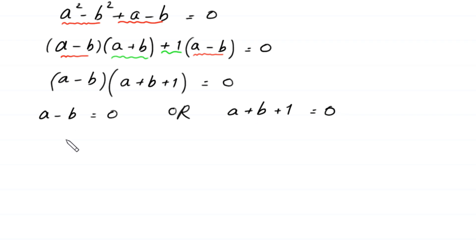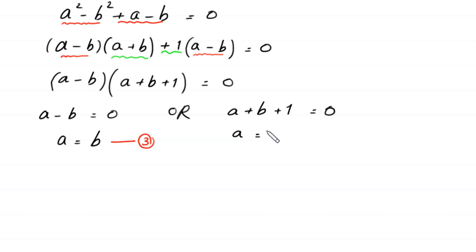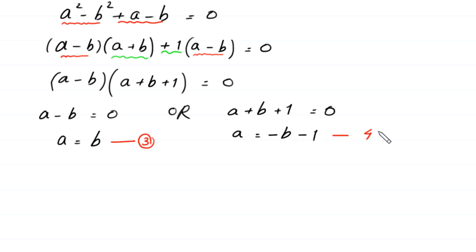From a minus b equals 0, we get a equals b — we name this equation 3. From a plus b plus 1 equals 0, moving b and 1 to the right side, we get a equals negative b minus 1 — we name this equation 4.